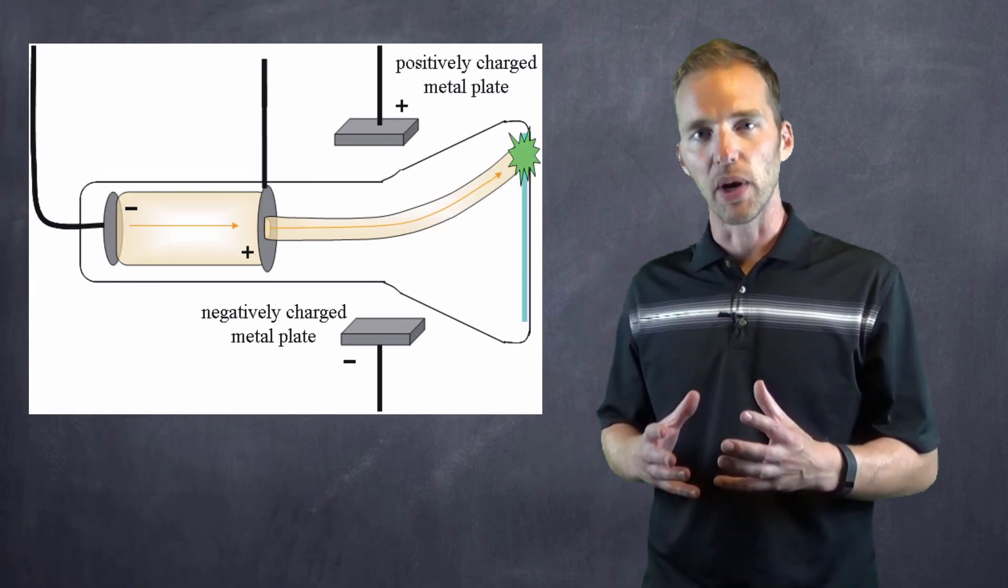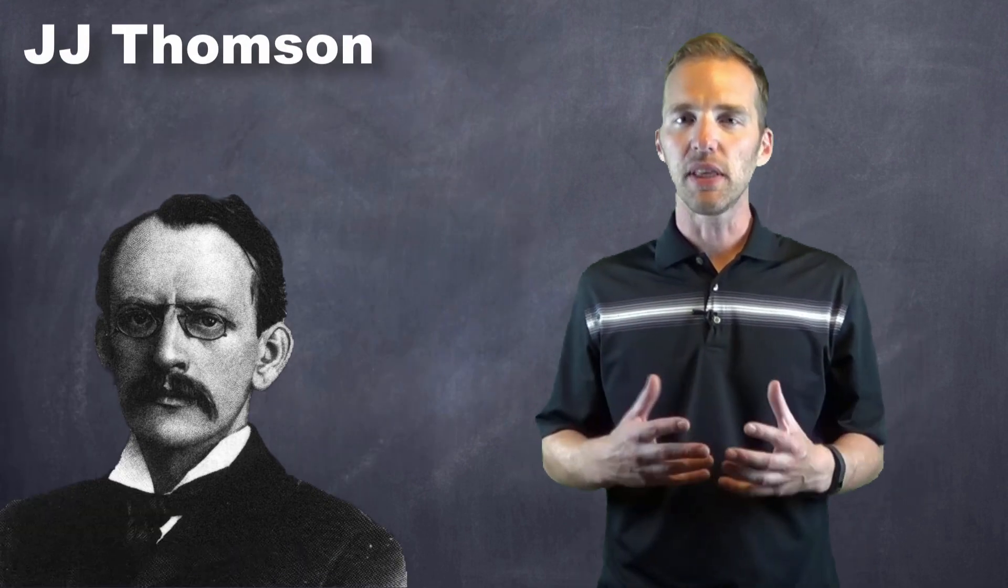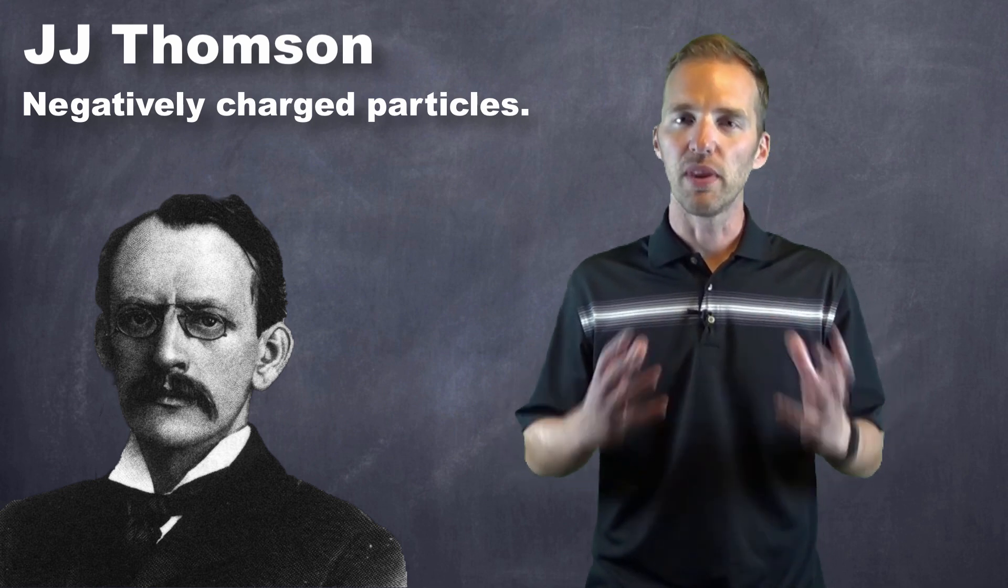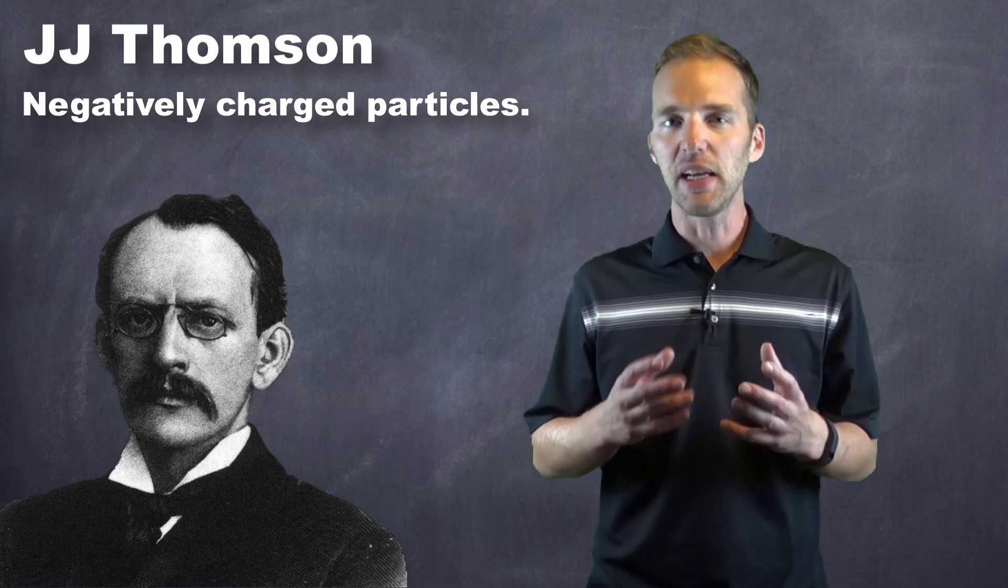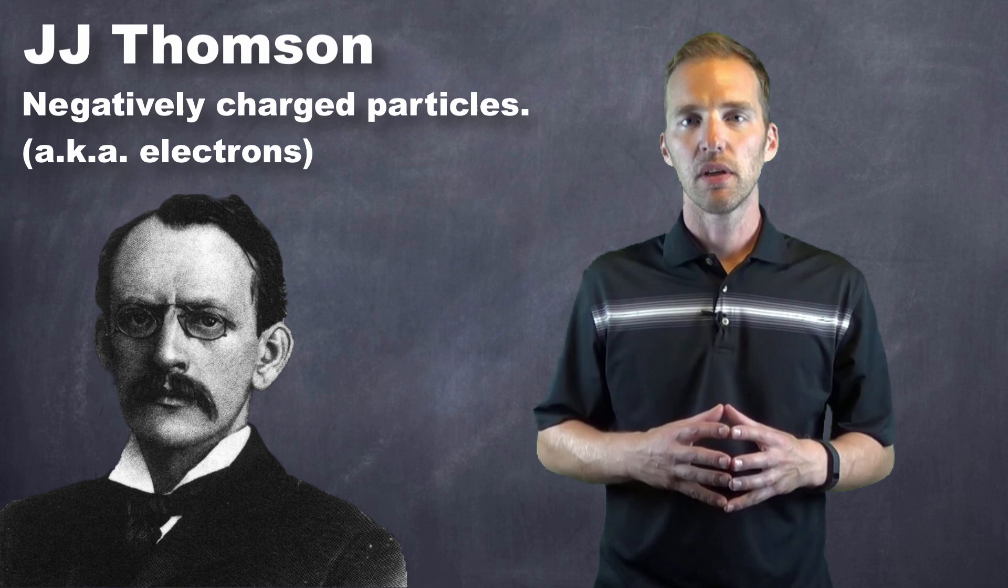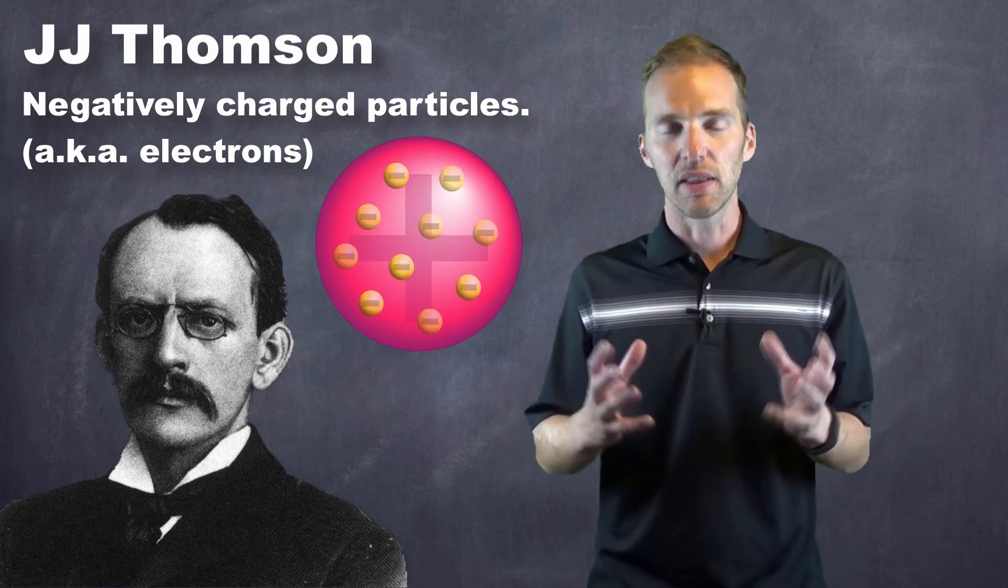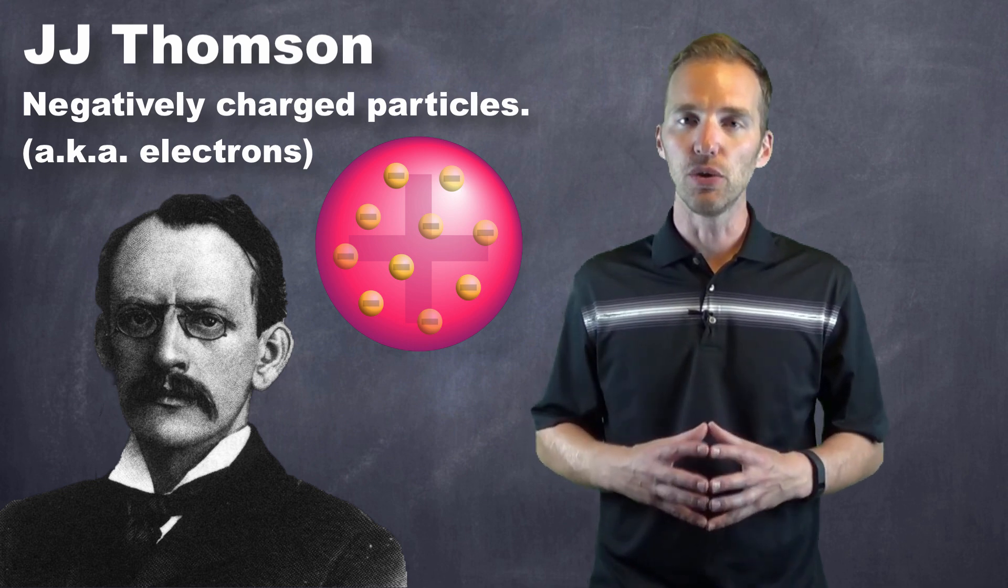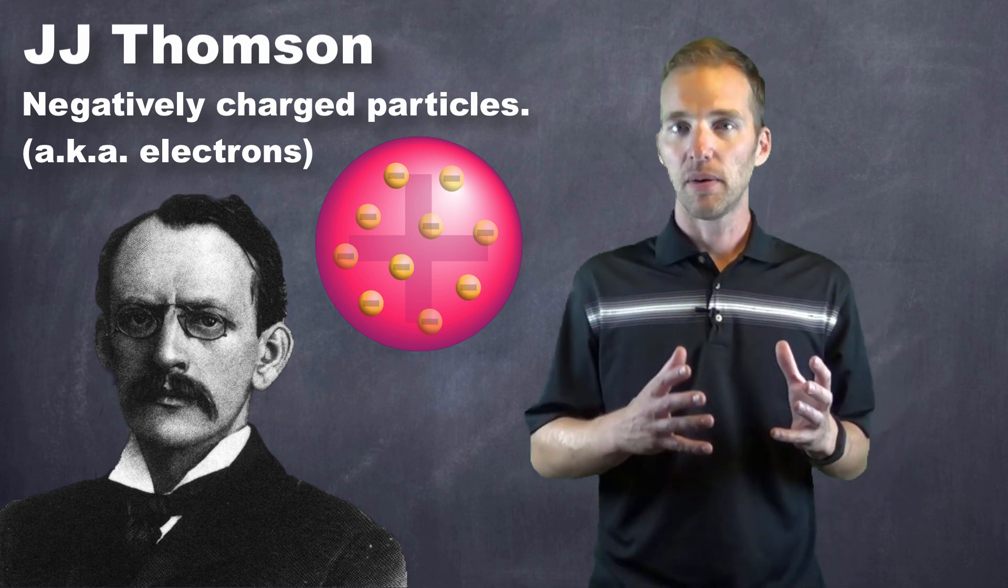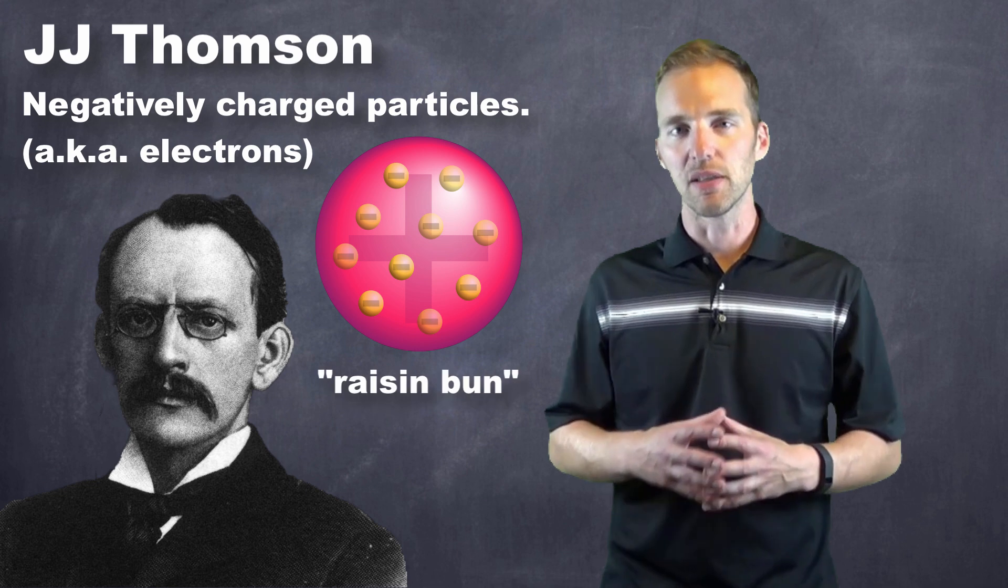And his experimentation with cathode rays and their response to magnetic field helped him to theorize that perhaps there are these tiny, negatively charged particles within the atom. And that these tiny, negatively charged particles, which further became known as electrons, were interspersed amongst a positive matrix that allowed the atom itself to remain neutral, but also allowed the atom to respond to a field illustrating that indeed there is a negative charge within the atom. And this became known as the Raisin-Bun model.